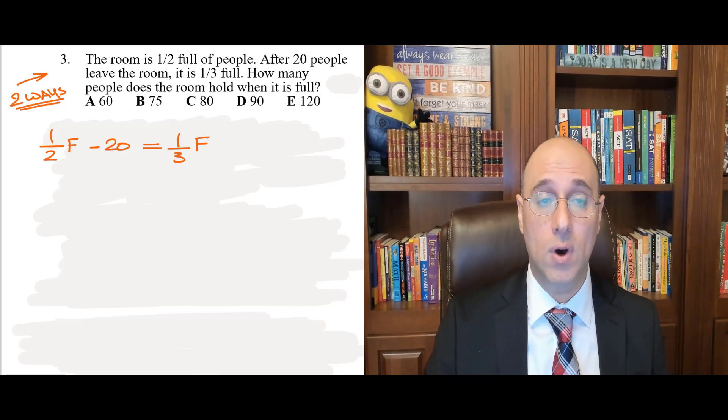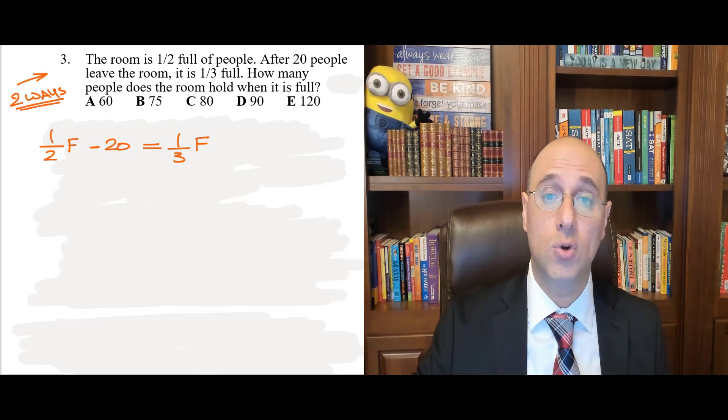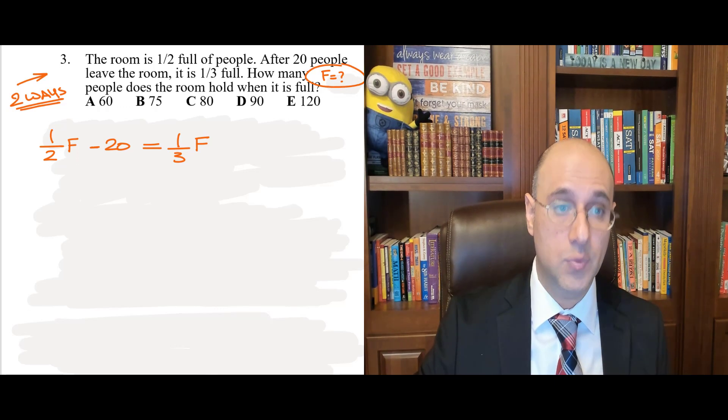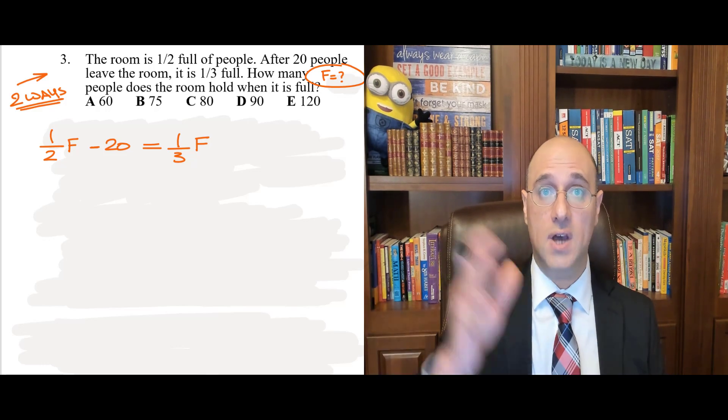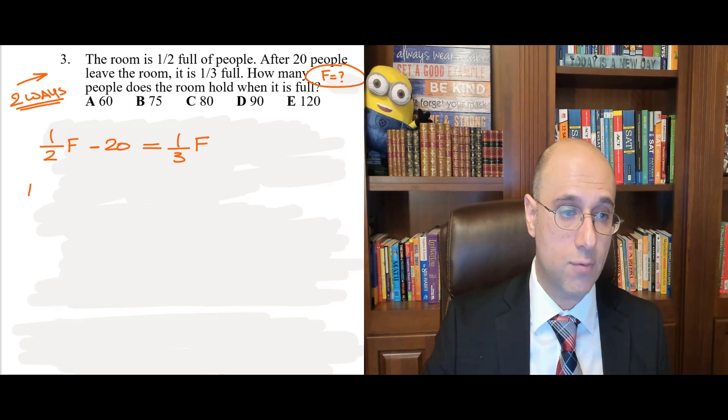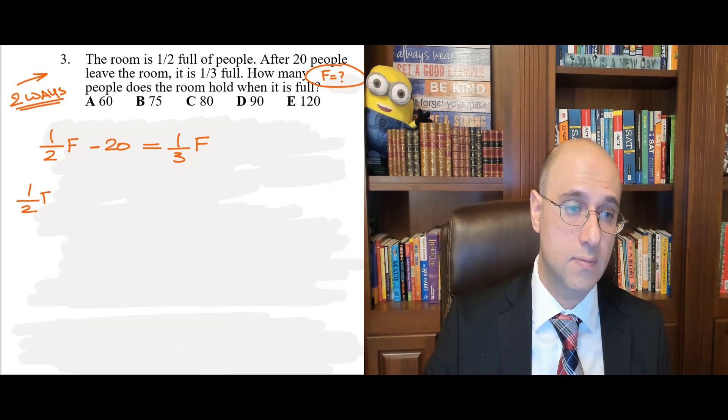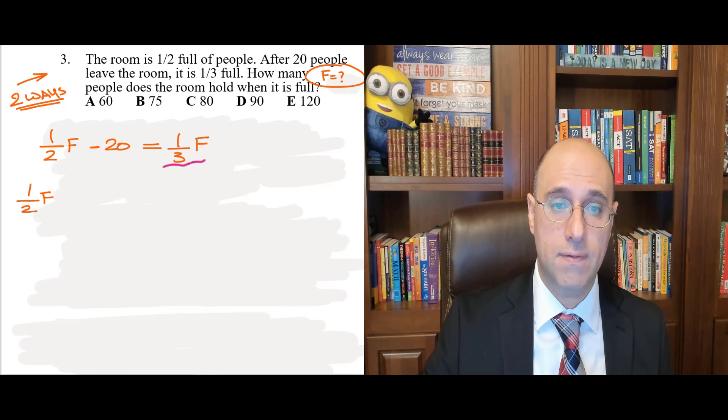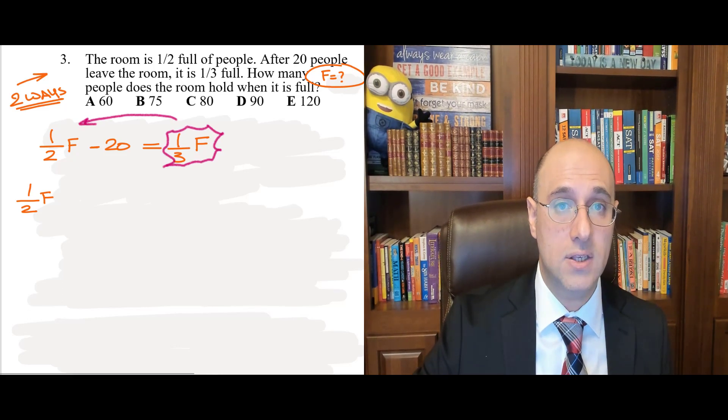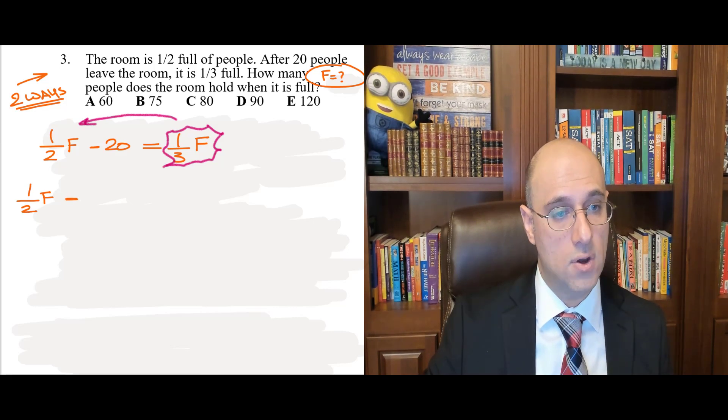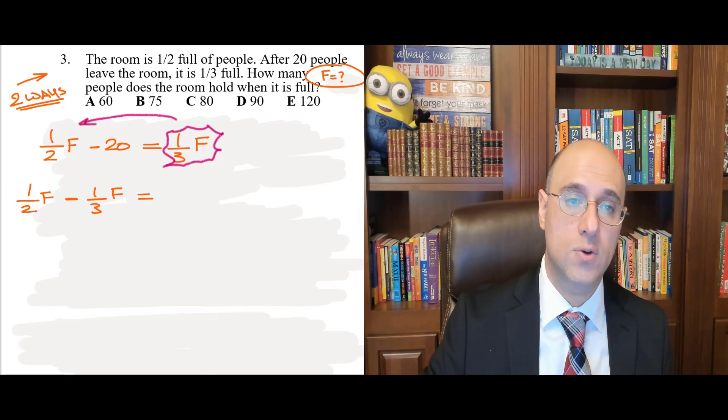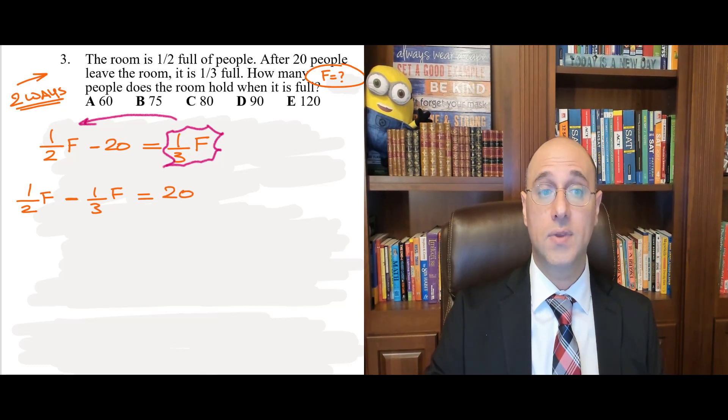All right, people? Now what? How many people does the room hold when it is full, which is the F? So, I'm actually looking for F. So, let's bring all our Fs on one side of the equation and all the numbers on the other side of the equation. So, I have half F right here. Let's leave it as it is. I have a third F right here on this side. I want to bring it to that side. So, it goes as minus. So, minus one over three F equals. The negative 20 right here goes to the other side as a positive 20.